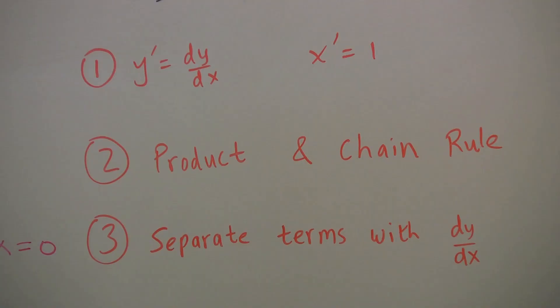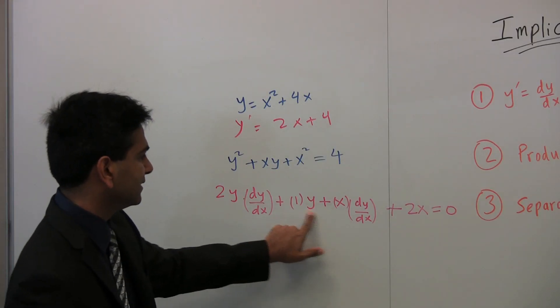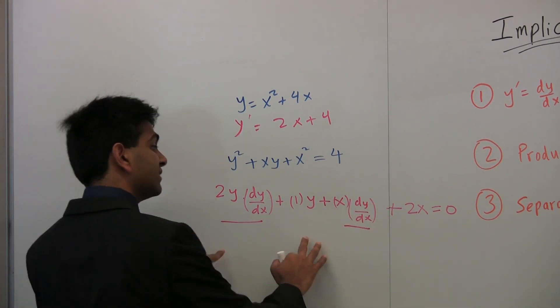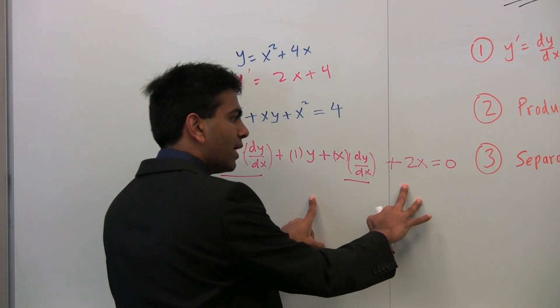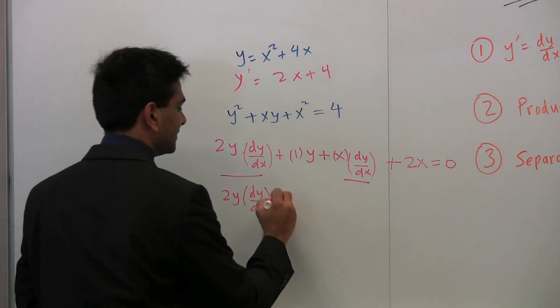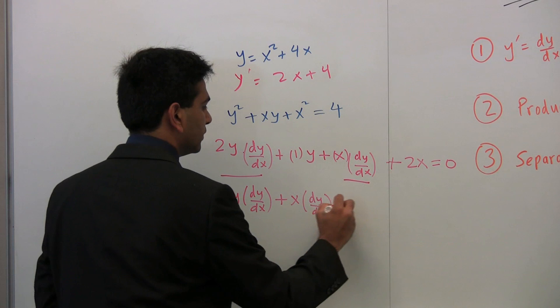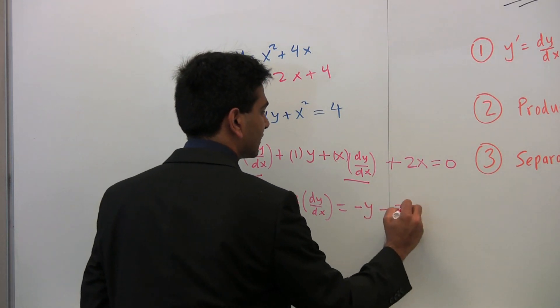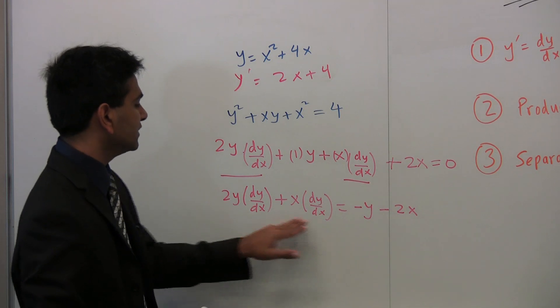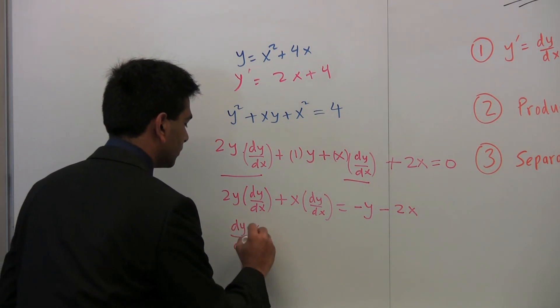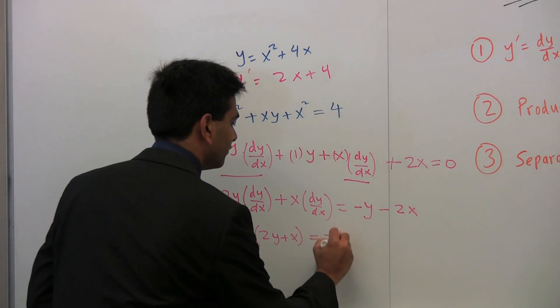Now, the final step — step three — is to separate out the terms with dy/dx in them. This term has a dy/dx, this one doesn't, this one does, this one doesn't. So we take the two terms with dy/dx and leave them on the left side, and move all terms without dy/dx to the other side. Now we have 2y dy/dx plus x dy/dx equals negative y minus 2x.